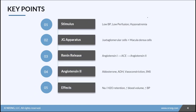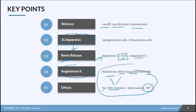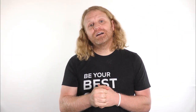Let's recap. The stimuli for the renin-angiotensin-aldosterone system are low blood pressure in the afferent arteriole, low perfusion to the kidneys, or hyponatremia. Those are sensed by the juxtaglomerular apparatus, which stimulates the release of renin. Renin converts angiotensinogen to angiotensin-1, which is converted to angiotensin-2 by ACE in the lungs. Angiotensin-2 — our powerhouse — causes the release of aldosterone and ADH, vasoconstriction, and increased sympathetic nervous system activity. Aldosterone and ADH help with sodium and water retention to increase blood volume, and all of these effects together increase blood pressure and improve flow to the kidneys so the stimuli can stop and everything levels off.